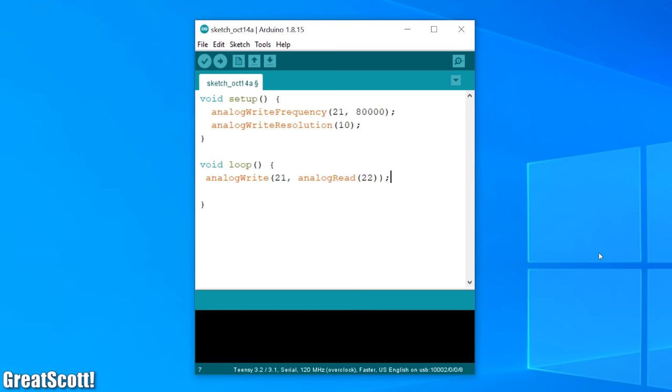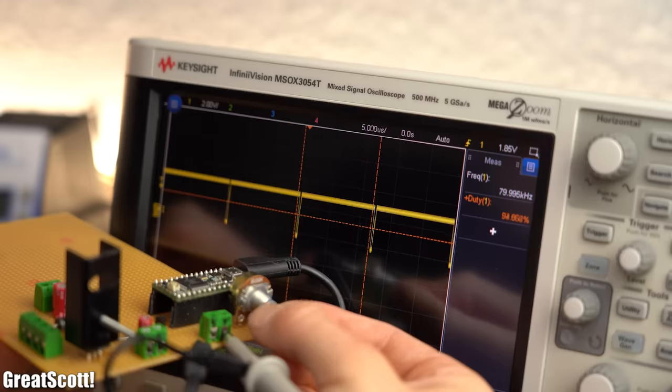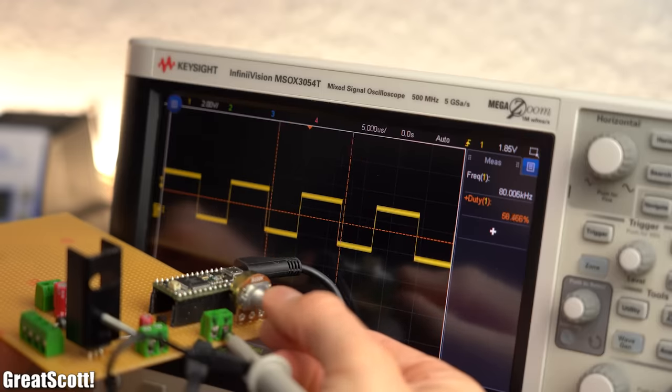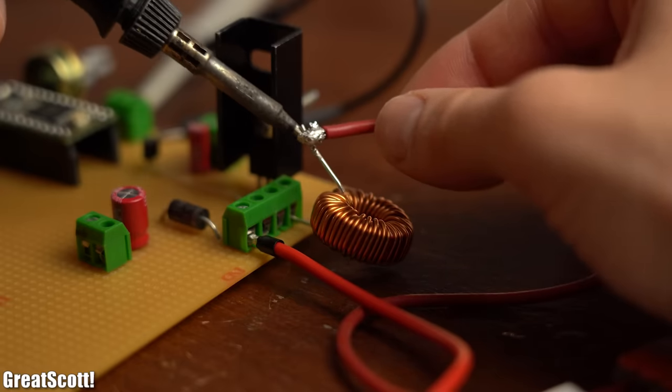And after writing a bit of code for the Teensy microcontroller in order to create an 80 kHz PWM signal whose duty cycle I can change with a potentiometer, it was time to connect a 100 µH inductor to the circuit.